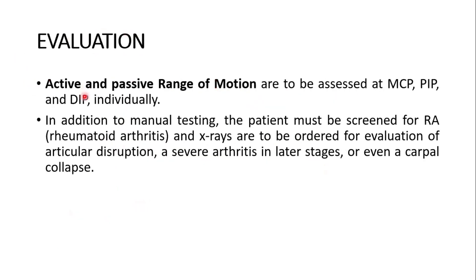For evaluation, active and passive range of motion are to be assessed at the metacarpophalangeal, proximal interphalangeal, and distal interphalangeal joints individually. These are the three joints at which active and passive ROM is assessed. In addition to manual testing, the patient must be screened for rheumatoid arthritis, and X-rays are to be ordered for evaluation of articular disruption — severe arthritis in later stages or even carpal collapse.